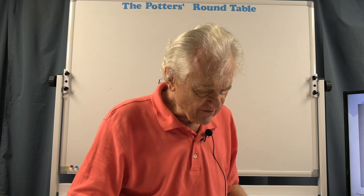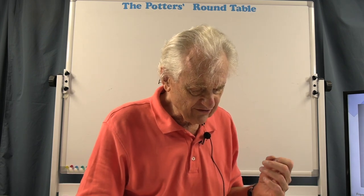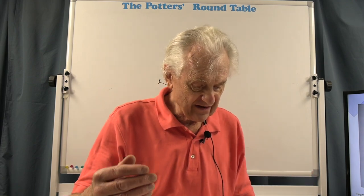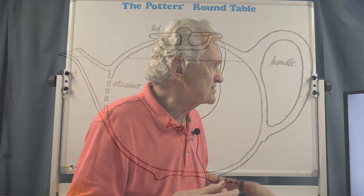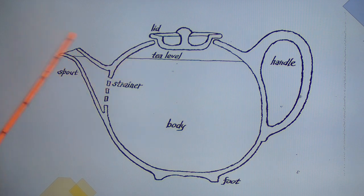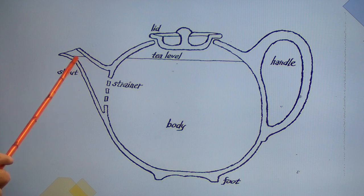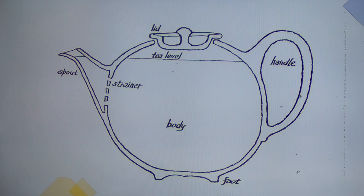Spout placement is also important. You don't want the spout so low on the body that the tip is below the maximum fill level. You want to make sure that the end of the spout is above the maximum tea level, so that the spout doesn't just drain the teapot while it's sitting. Make sure the spout goes high enough above what you anticipate to be the maximum fill level.